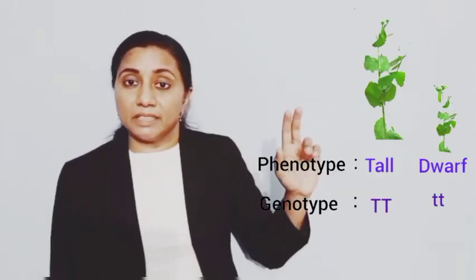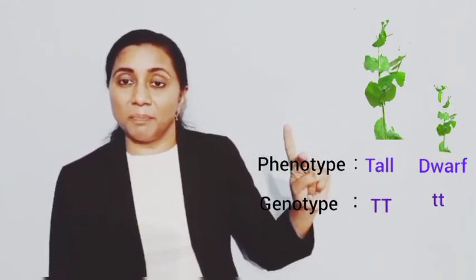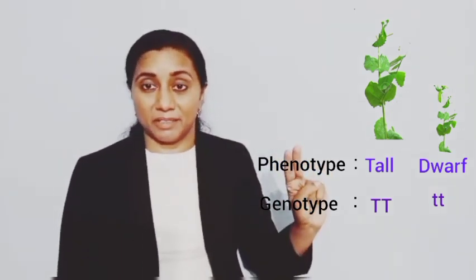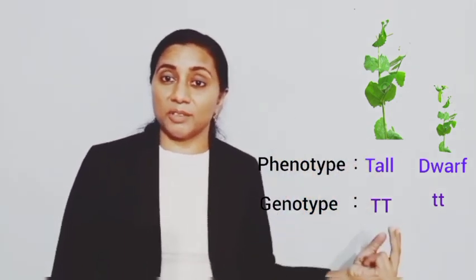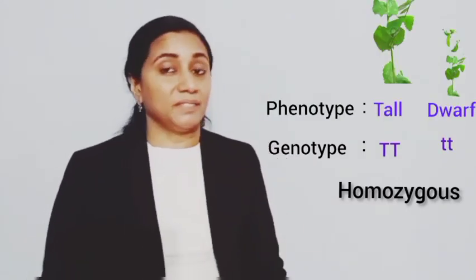In the case of alleles, we can see similar alleles and different alleles. Mendel selected a tall plant with TT — both alleles the same — and a dwarf plant with tt — both alleles the same. When both alleles are the same, the organism is homozygous. When the alleles are different, it is heterozygous.